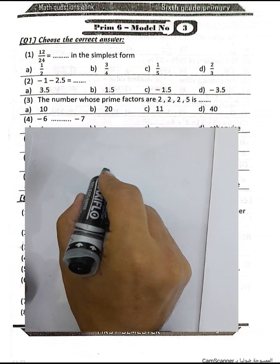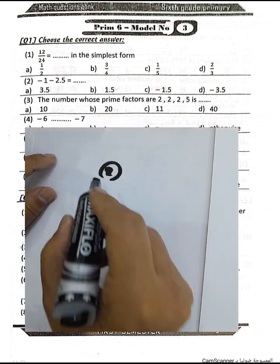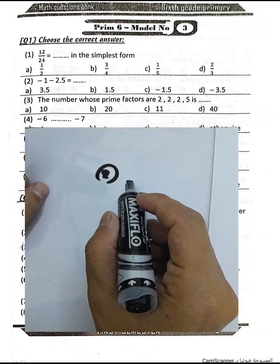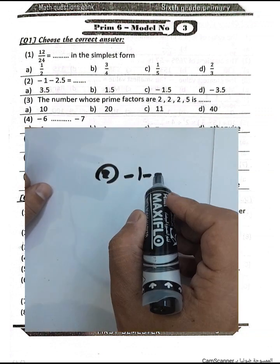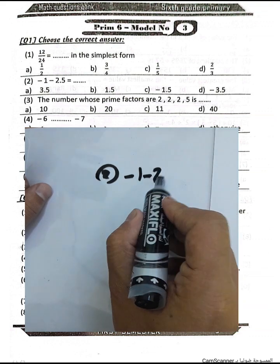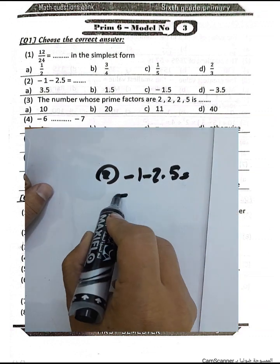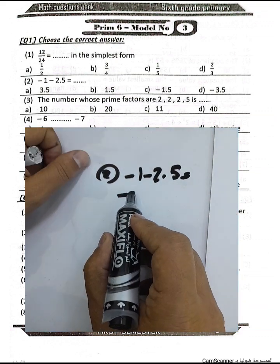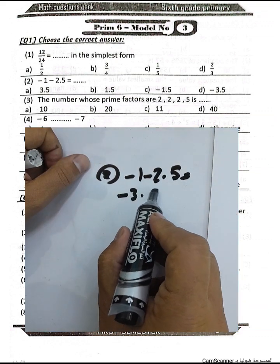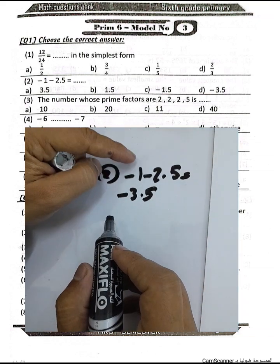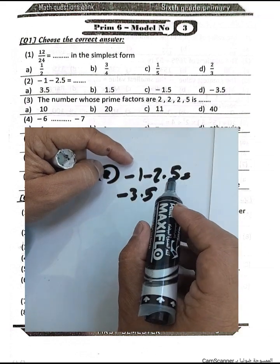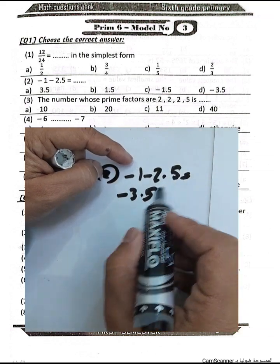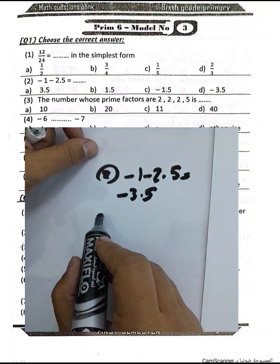Question number 2: We have negative 1 subtracted by 2.5. The result will be negative 3.5 — negative 1 and negative 2.5 combined give negative 3.5.